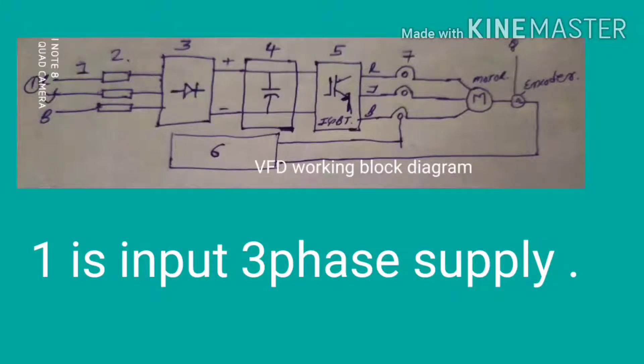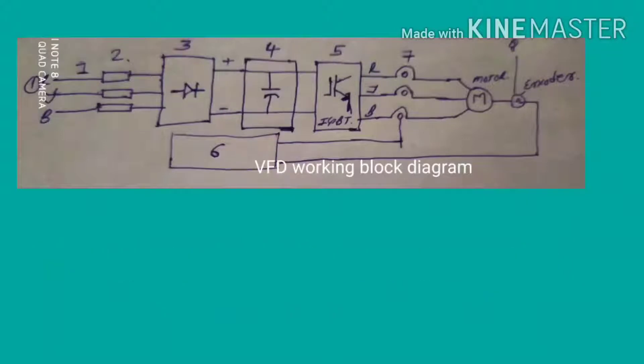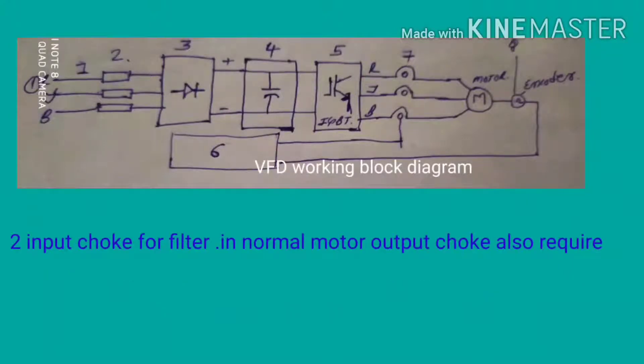First is the input three-phase supply. Here you are seeing the RYB input three-phase supply, for example 415 volt. Second is the input choke for filter. In normal motor, output choke is also required.